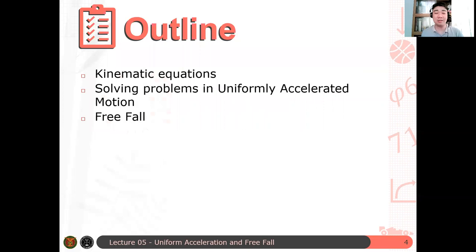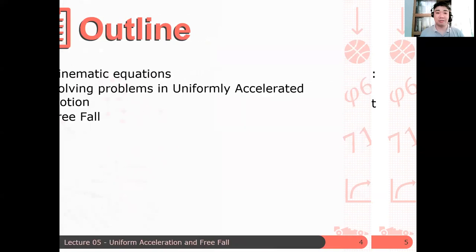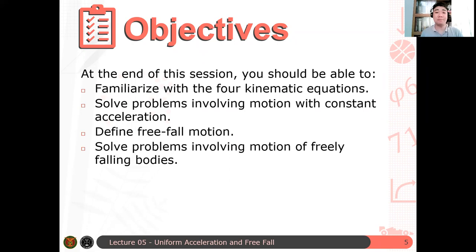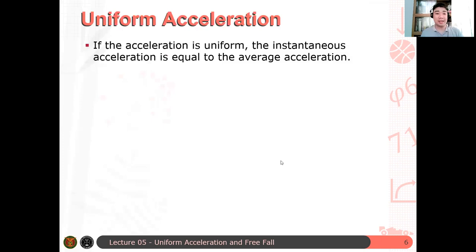Here's an outline of the discussion. We first derive the kinematic equations for uniformly accelerated motion. And then we solve problems in UAM, or constant acceleration kinematics. And then, finally, as a special case of uniformly accelerated motion, we discuss freefall. Here are the objectives of this discussion. At the end of this session, you should be able to familiarize with the four kinematic equations, solve problems involving motion with constant acceleration, define freefall motion, and solve problems involving motion of freely falling bodies. Are there any questions so far?